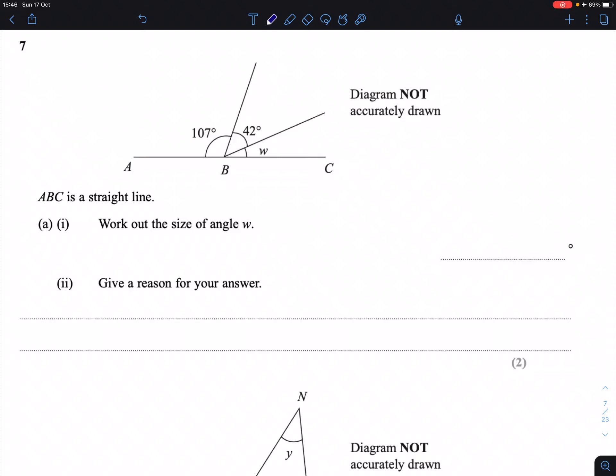Question 7. We have a diagram here being told that ABC is a straight line. We've been given a couple of angles here and we're missing one, W. Work out the size of angle W.